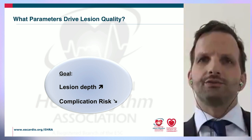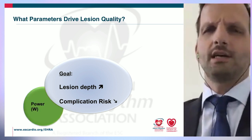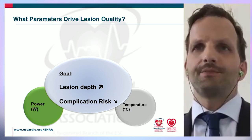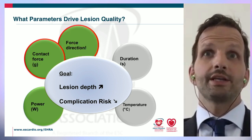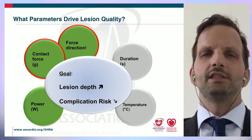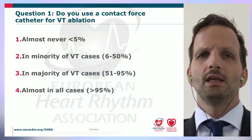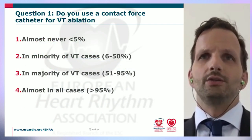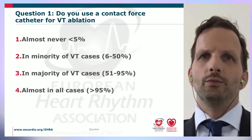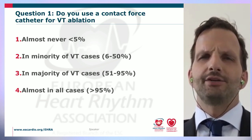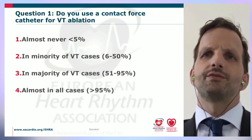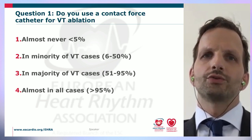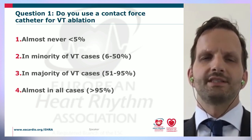The parameters affecting lesion quality are power, temperature, duration, contact force, and force direction — which is particularly important in epicardial VT ablation. A polling question: do you use a contact force catheter for VT ablation? Options are almost never (<5%), in a minority of VT cases (6–50%), in a majority of VT cases (51–95%), or in almost all cases (>95%).